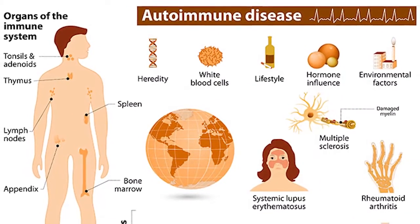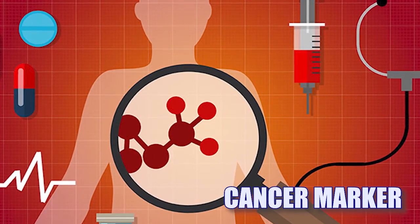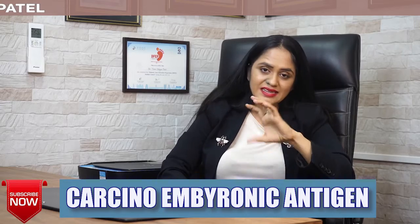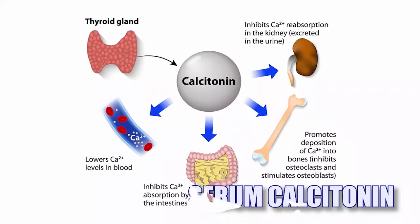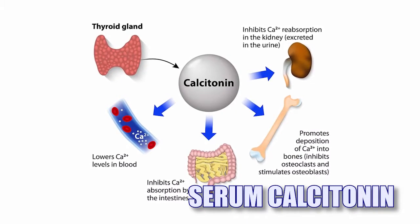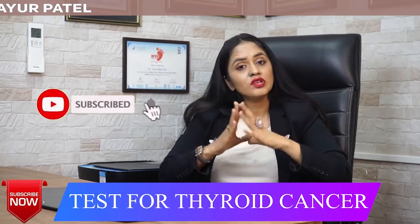Another set of tests we do are cancer markers. The first cancer marker is CEA — carcinoembryonic antigen. CEA levels are typically higher when you have a medullary thyroid carcinoma. So in cancer markers, we usually do two: CEA and serum calcitonin, which we already discussed. These are the blood tests we do to find out whether you have thyroid cancer or not.